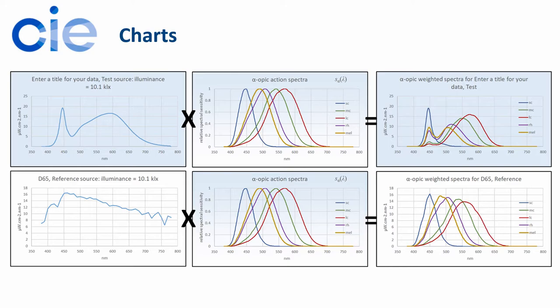So on the left-hand side, we have your measurement data, the unweighted spectral irradiance in the top left. And then when they're multiplied by the spectral weighting curves, the alpha-opic action spectra, the five curves there in the middle at the top, you get the five curves on the top right, which show the alpha-opic weighted spectra. And those can be used directly in the calculation of alpha-opic irradiance.